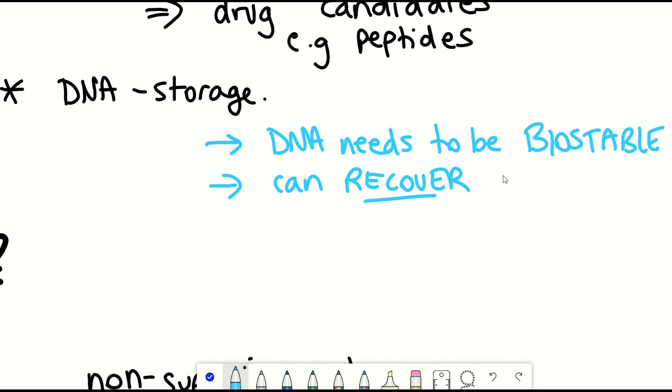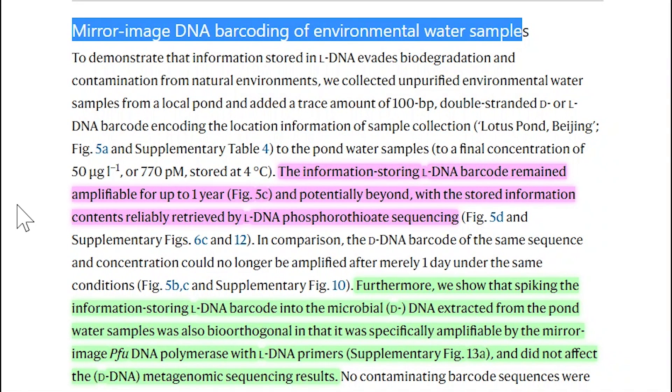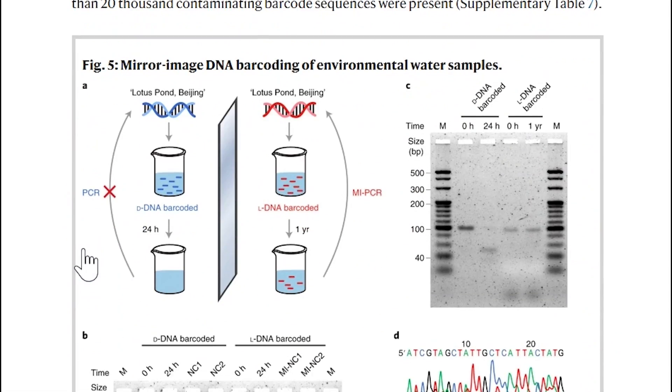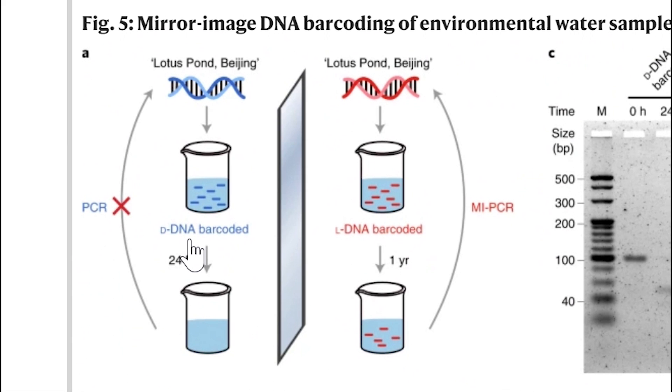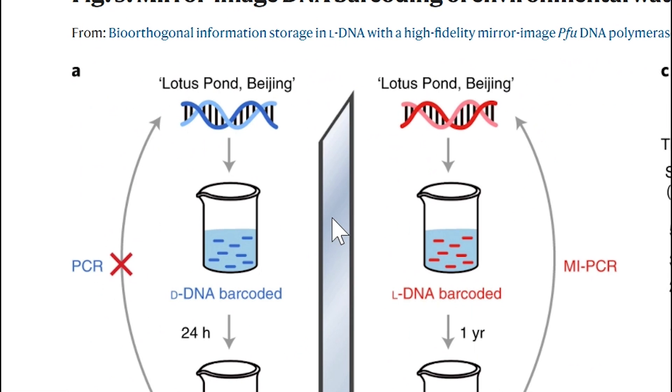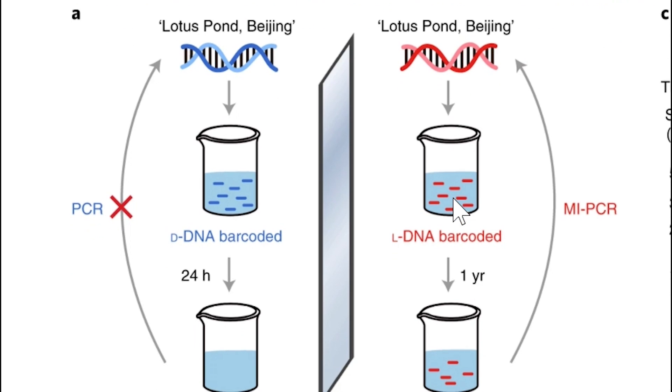The bigger challenge is making sure that the DNA is biostable and that that same information can be recollected after a passage of time. And so what they did in this paper is actually compare the ability of DNA information storage in the normal version of DNA with the mirror image version of DNA. So what they did is they took 100 base pairs of either normal D or the mirror image L version of DNA. And this was encoding information about a sample collection. In this case, it was a pond in Beijing.